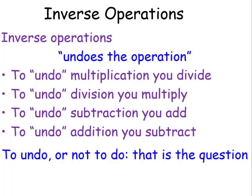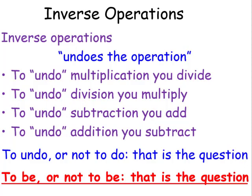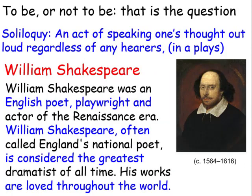To undo or not to do, that is the question. Similar to 'to be or not to be, that is the question.' This soliloquy was written by William Shakespeare, an act of speaking one's thoughts out loud regardless of any hearers. He was an English poet, playwright, and actor of the Renaissance era. William Shakespeare, often called England's national poet, is considered the greatest dramatist of all time. His works are loved throughout the world. This information on William Shakespeare was found on Wikipedia.